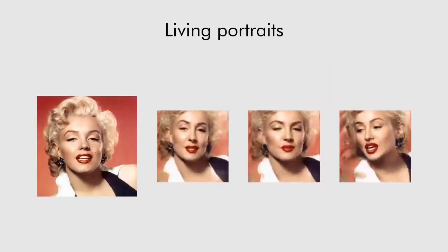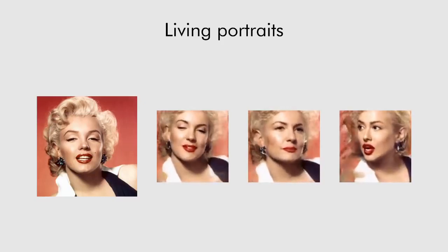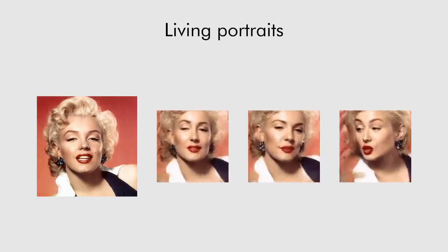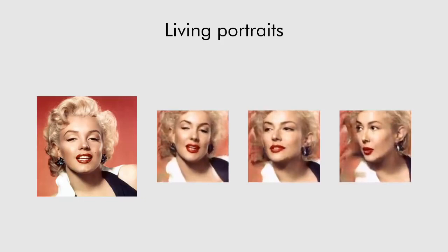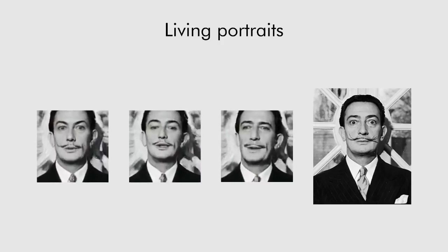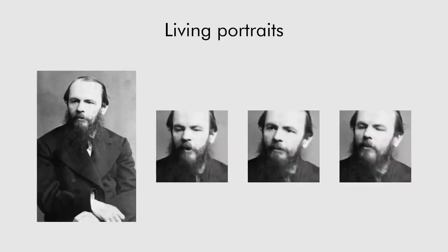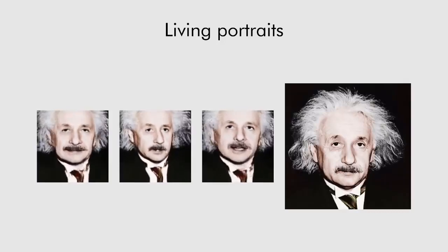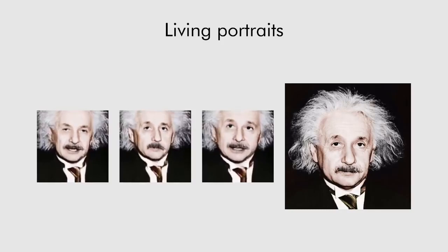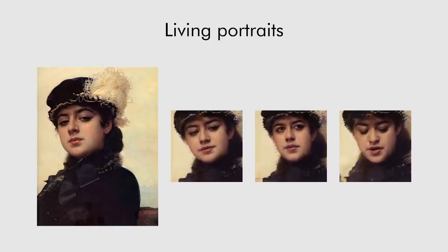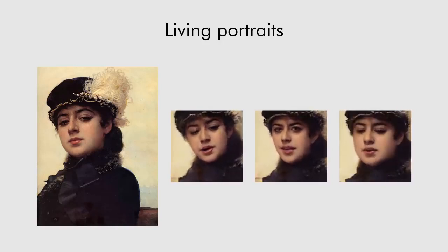We can push the generalization even further, applying the system to famous photographs. In each case, we automatically find people in the VoxCeleb2 dataset with landmarks suitable for the animation of a particular portrait. With a certain degree of success, we can even apply the models to paintings, despite the large domain gap between paintings and YouTube videos.